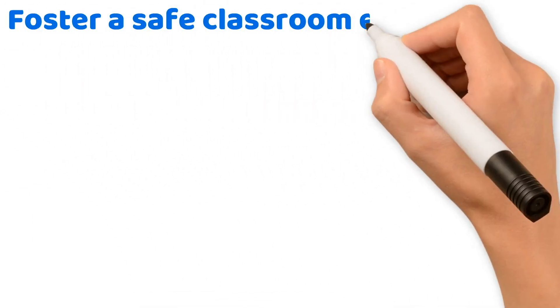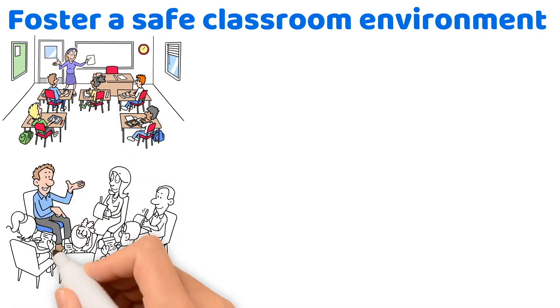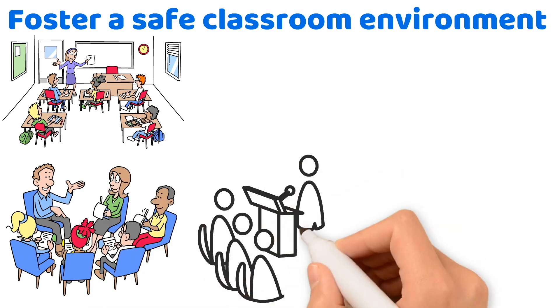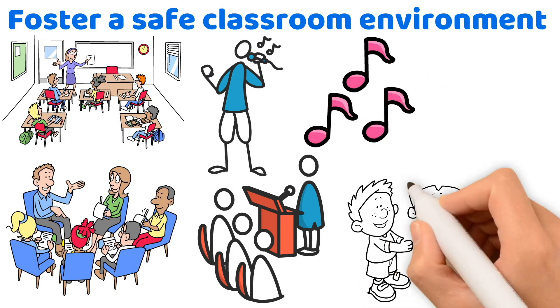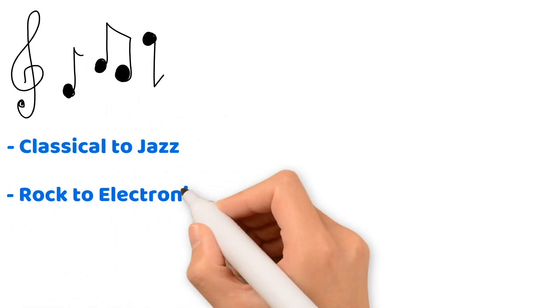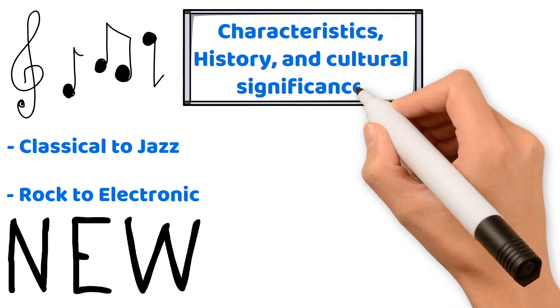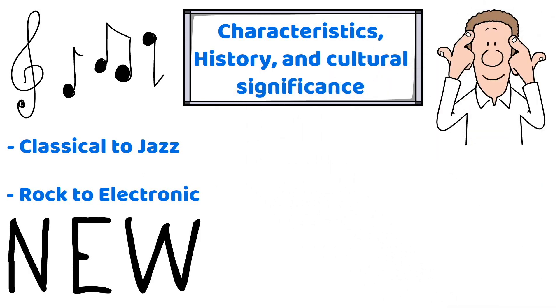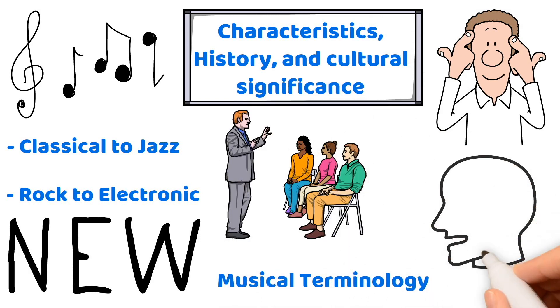Foster a safe classroom environment where students feel comfortable sharing their musical experiences. Regular discussions about concerts attended, personal practice, or new songs discovered can stimulate a musical dialogue that enriches the learning environment for everyone. Expose students to a wide array of musical styles, from classical to jazz, from rock to electronic. Each week, introduce a new genre, discuss its characteristics, history, and cultural significance. A solid grasp of music terminology is essential for effective communication in the classroom. Use musical terminology in discussions to build students' vocabulary.